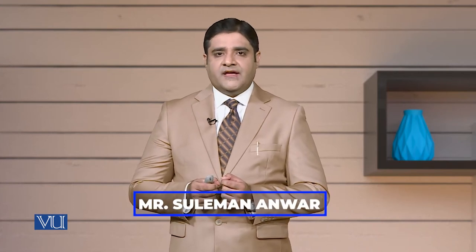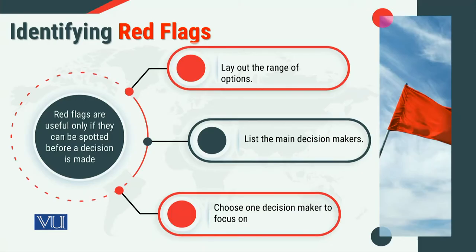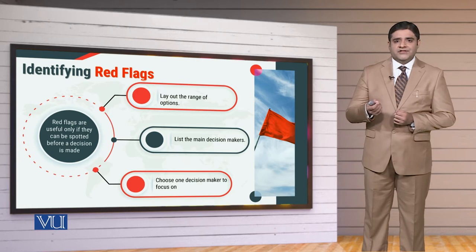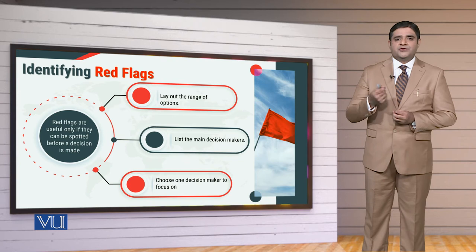Another important thing is that we have to focus on the decision makers — how they are going to make the decision and who is the most important person in that whole process. We have to choose one decision maker who will make the right decision at the right time, a person who is able to control their emotions and overcome biases and prejudice.